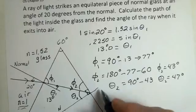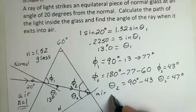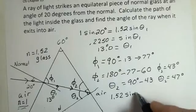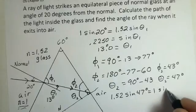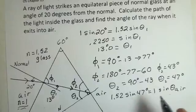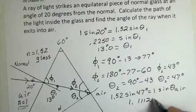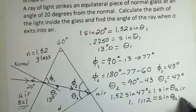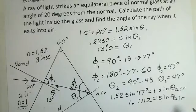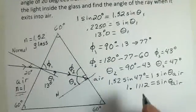Assuming the ray refracts out into the air on this side, Snell's Law gives us 1.52 times sine of 47 degrees equals the index of refraction of air times sine of the angle in air. Using a calculator: 1.52 times sine of 47 degrees gives 1.1112. Taking the inverse sine — the largest value the sine function can produce is 1, so this is impossible. Your calculator will show an error. We've reached total internal reflection.